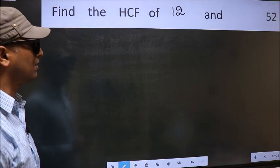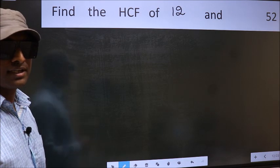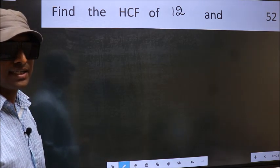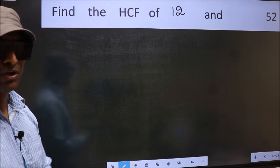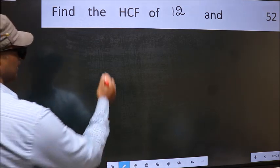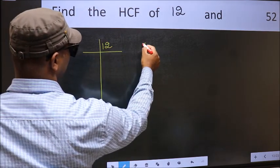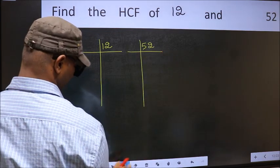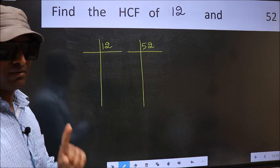Find the HCF of 12 and 52. To find the HCF, we should do the prime factorization of each number separately. What I mean is, we'll write 12 and 52. This is your step 1.